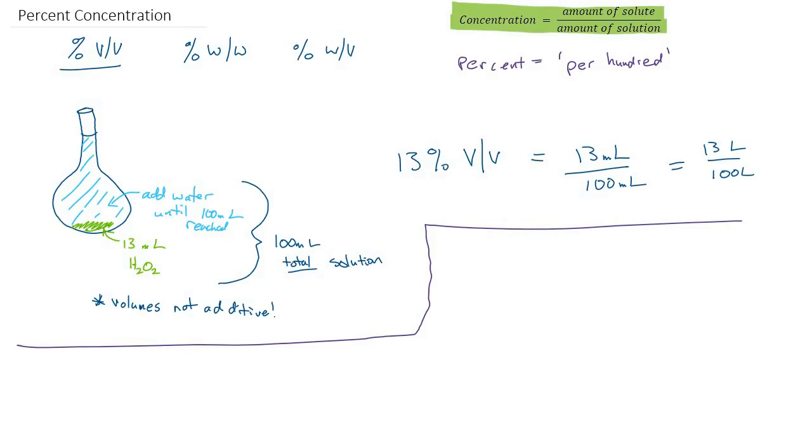What about the next example of percent weight by weight? Let's just pick a different number. Say we are talking about 27 percent weight by weight. What does that really mean? Well the weight technically refers to mass, but in everyday jargon people tend to call mass weight. This just means we have 27 out of 100, but this time we are dealing with masses. So 27 grams out of 100 grams, or 27 kilograms out of 100 kilograms.